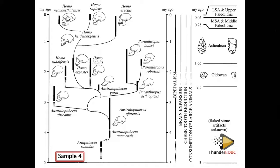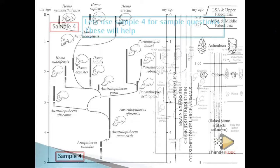Which ancestor started using two limbs — bipedalism? Draw a line at that point. It indicates that Australopithecus anamensis started using two limbs. Just before that, they were using four limbs — quadrupedal. That's how you interpret it: draw a line, then read the answer from the scale.